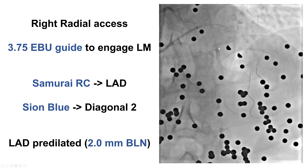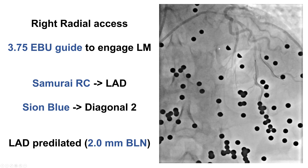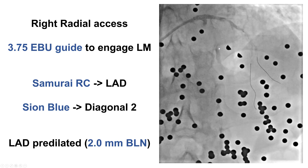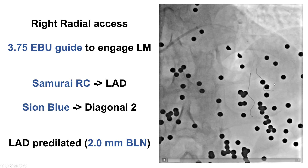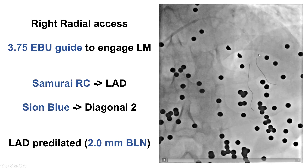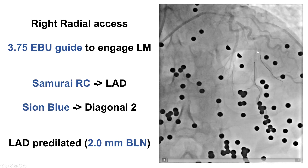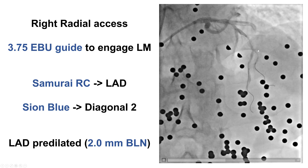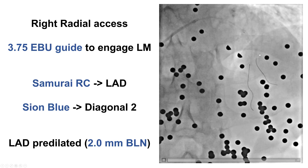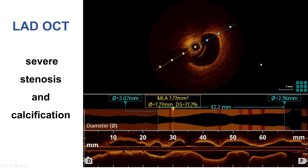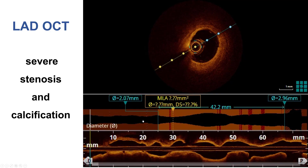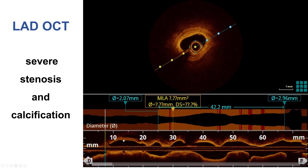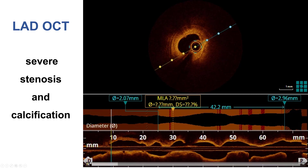This was a bifurcation with a very large diagonal branch, so we decided to protect the branch. We used workhorse wires to wire both the LAD and the diagonal branch. We typically don't predilate the side branch unless there is significant ostial disease, because there is a risk of dissecting it and then requiring a stent. We predilated the vessel and did optical coherence tomography to determine whether we needed to perform atherectomy or some other vessel preparation.